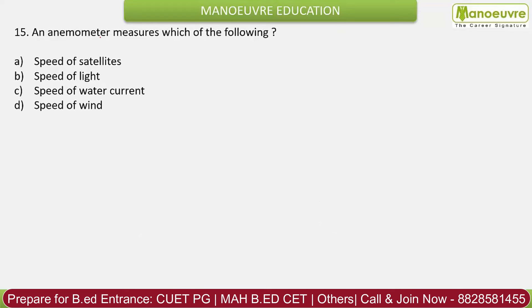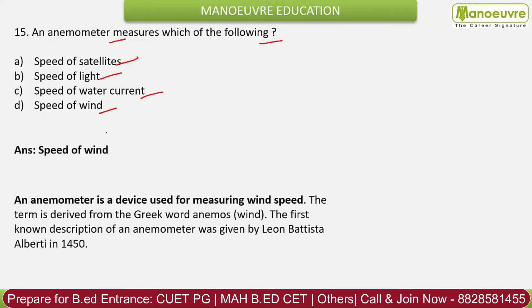Question 15: An anemometer measures which of the following? Options: speed of satellites, speed of light, speed of water current, speed of wind. The correct answer is speed of wind. An anemometer is a device used for measuring wind speed. It was invented by Leon Battista Alberti in 1450.